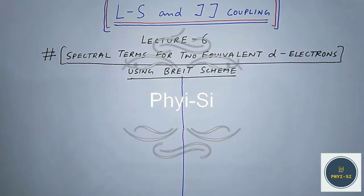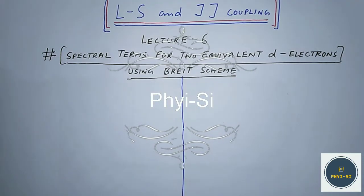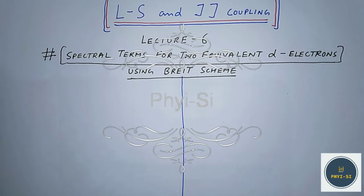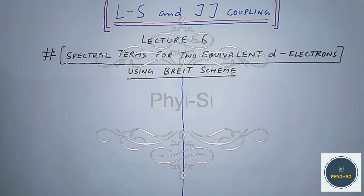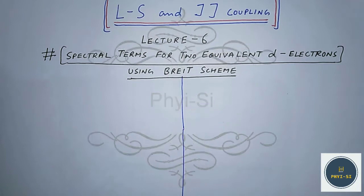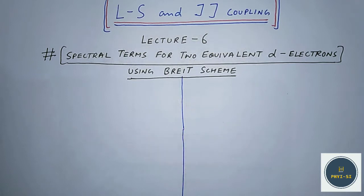Hello friends and welcome again to my channel 5Sci. This is lecture number 6 on LS and JJ Coupling. In this particular lecture, we will apply the Breit scheme to two equivalent d-electrons.